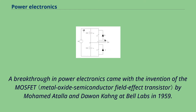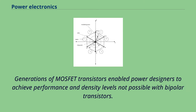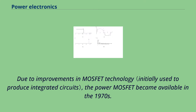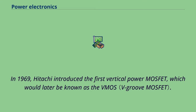A breakthrough in power electronics came with the invention of the MOSFET by Mohamed Atalla and Don Kahng at Bell Labs in 1959. Generations of MOSFET transistors enabled power designers to achieve performance and density levels not possible with bipolar transistors. Due to improvements in MOSFET technology, the power MOSFET became available in the 1970s. In 1969, Hitachi introduced the first vertical power MOSFET, which would later be known as the VMOS.